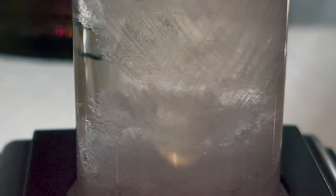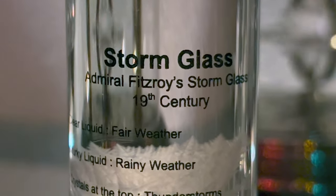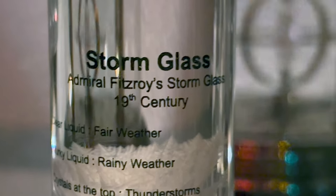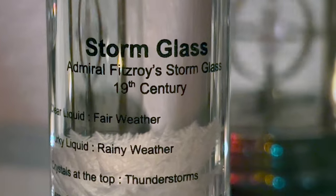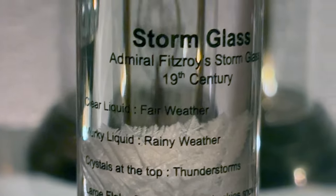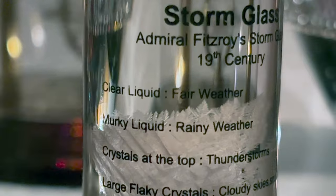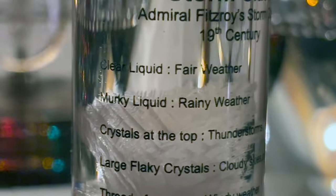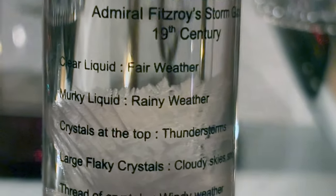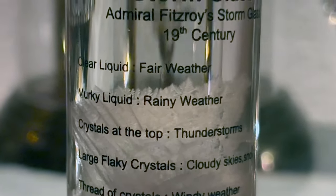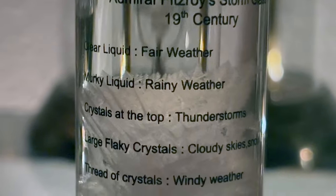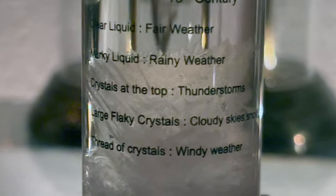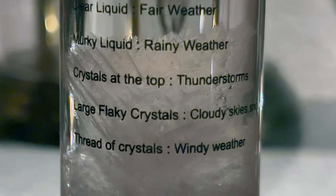Look at the crystals in this Admiral Fitzroy apparatus here. We can see that Admiral Fitzroy is a storm glass from the 19th century or 1800s. It says that if there's clear liquid, it's fair weather. If it's murky liquid, there's rainy weather. If there's crystals at the top, it indicates thunderstorm. If there are large flaky crystals, there's cloudy skies or snow. And if there are threads of crystals, it means windy weather.